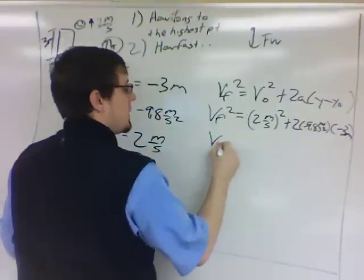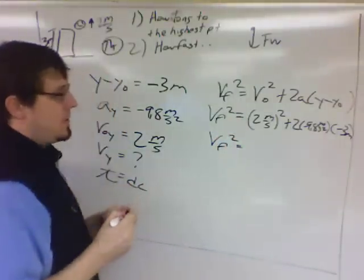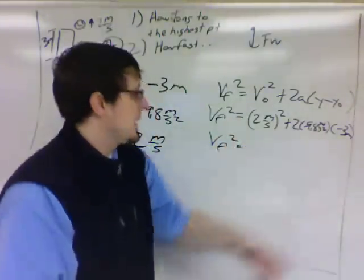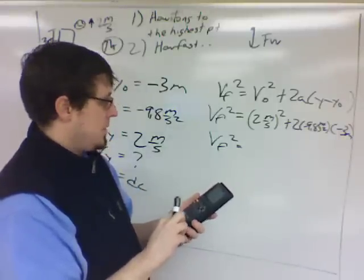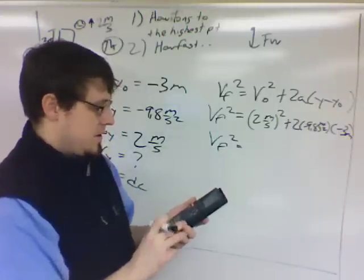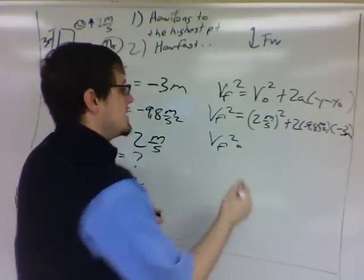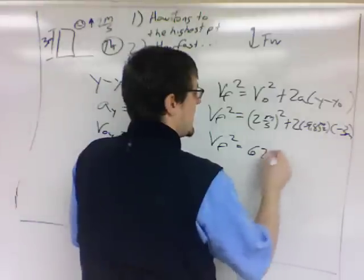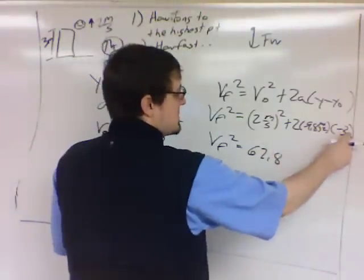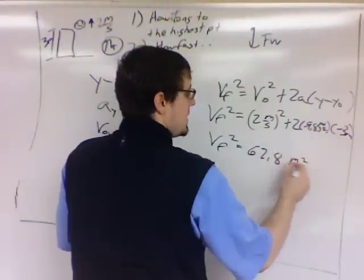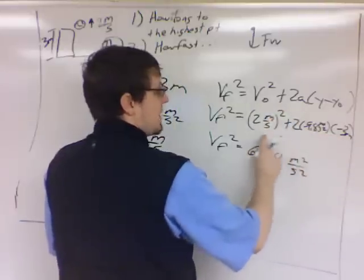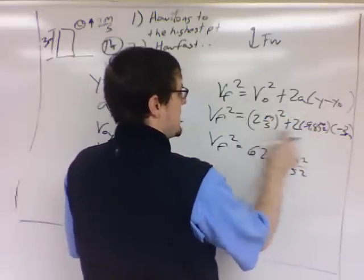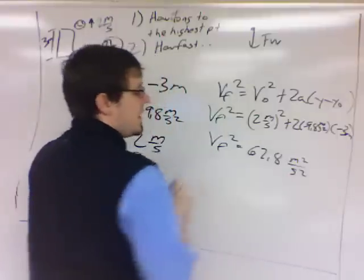And now let's figure out what VF squared is. So I'm going to plug this into my calculator. So 2 squared is 4 plus 2 times 9.8 times 3, 62.8. So this is 62.8. And if you look at the units, meter times a meter is a meter squared divided by a second squared. And here, that would be the same thing. You can't add apples and oranges. These both have to have the same units, so we are allowed to add them.